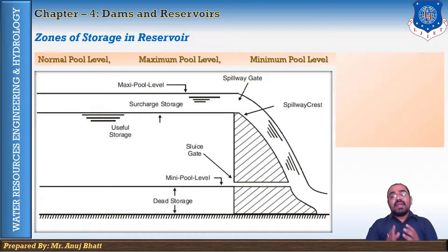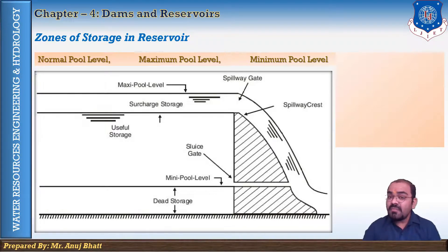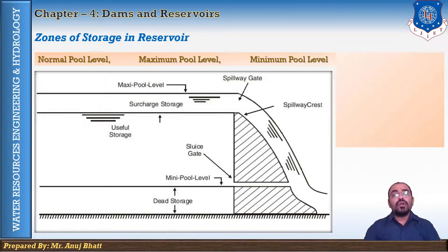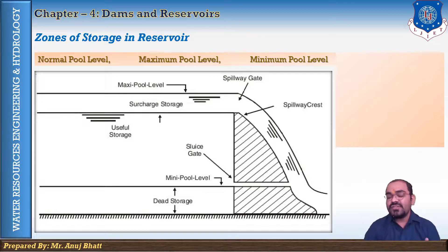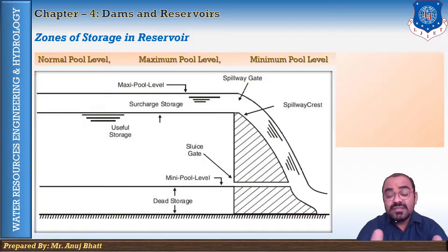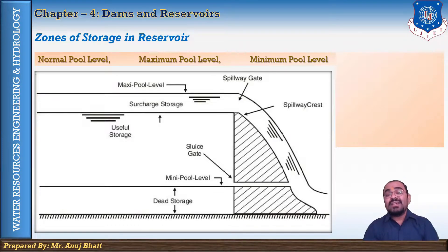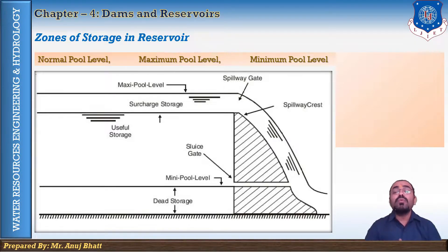In the case of hydroelectric power generation, a minimum head is essential, and so the water level of the reservoir should not drop below the minimum pool level. Otherwise, the efficiency of power generation would not be maintained. At reservoirs purposefully constructed for electric generation, this minimum pool level indication is necessary.